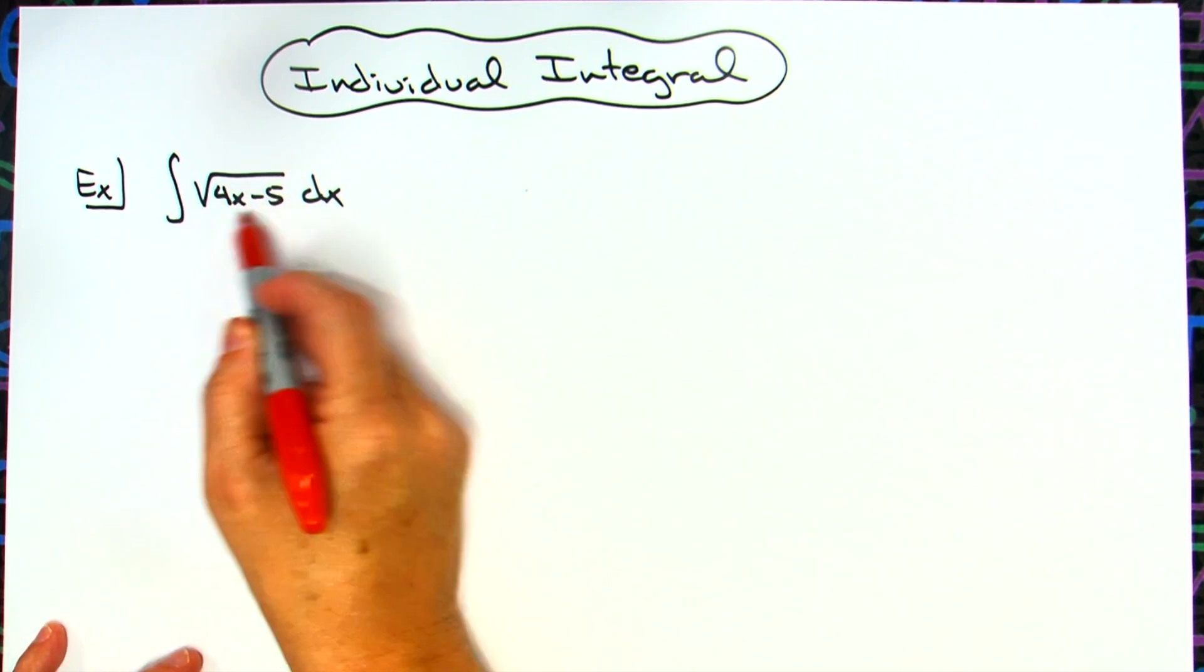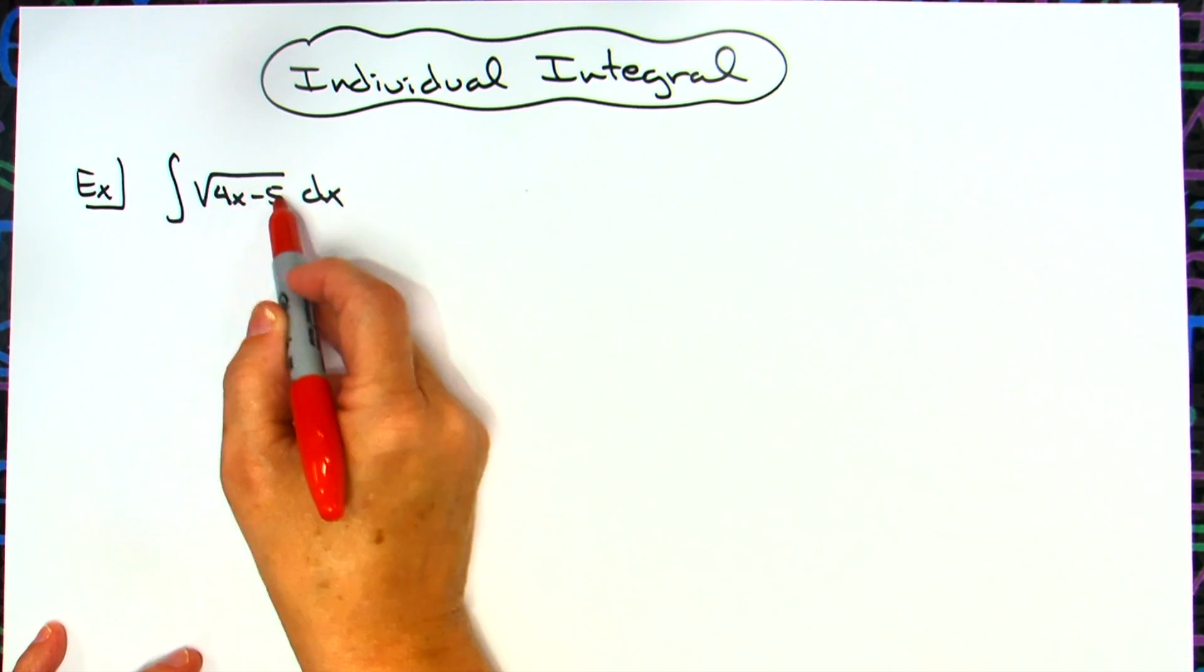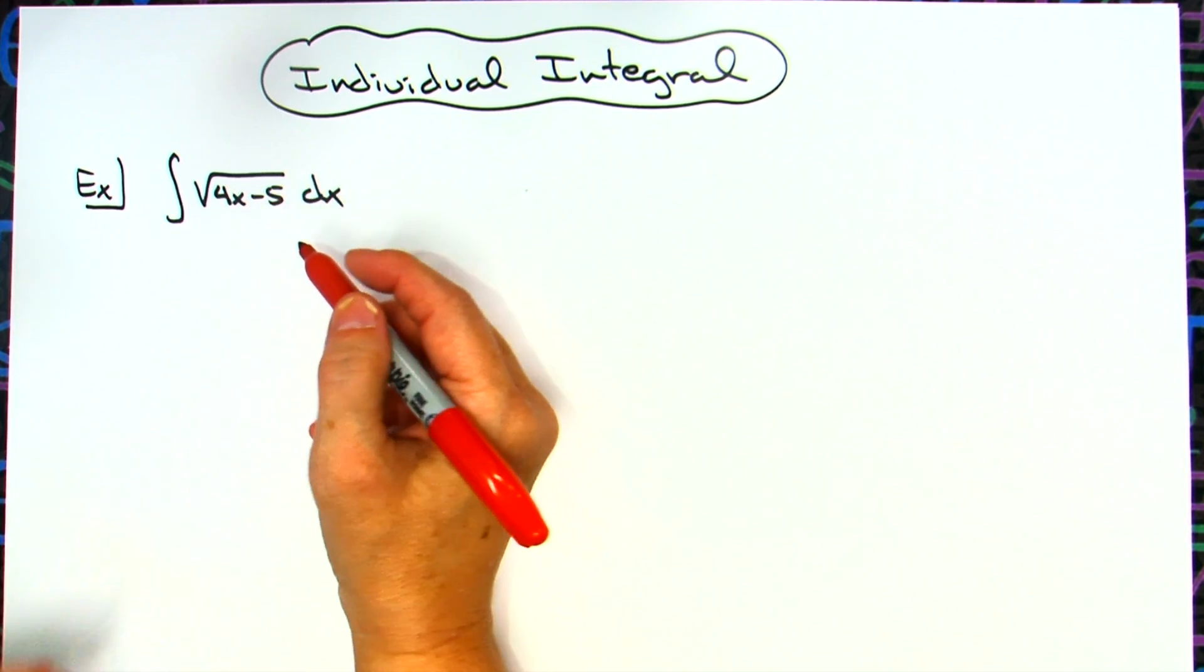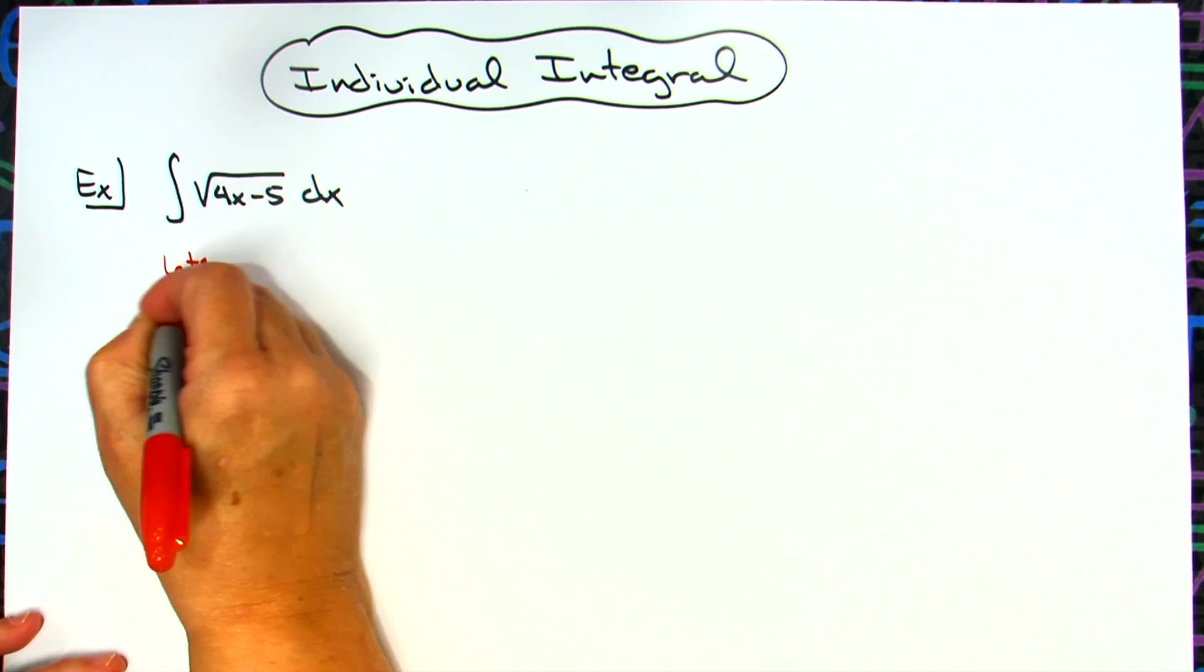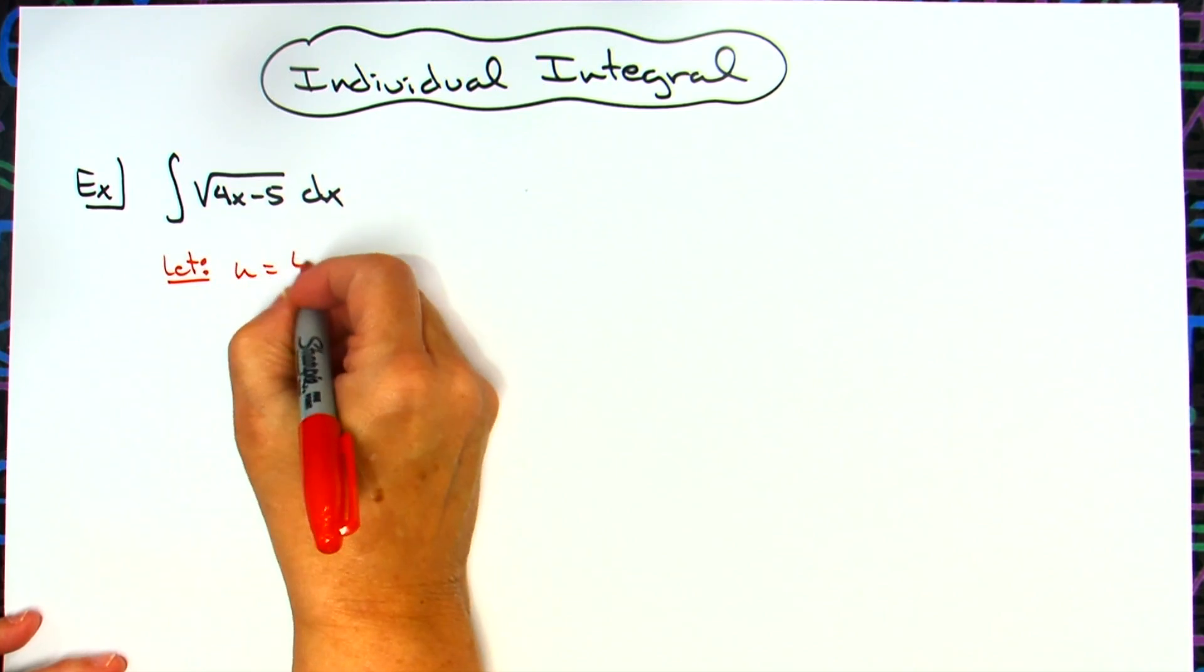An integral like this, you want to try to find the innermost part of that function, which is going to be that 4x minus 5. That's what you're going to let your u be. So we're going to let u equal that 4x minus 5.